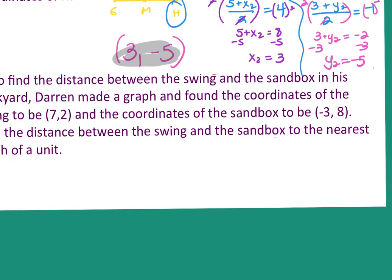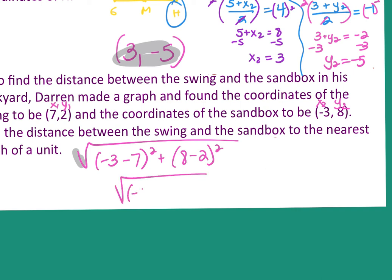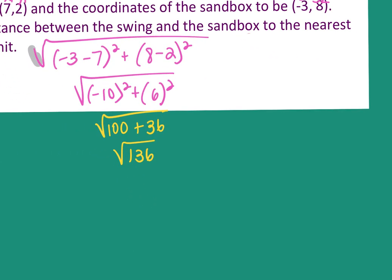So I get the square root of, this could be my x1, y1, this could be my x2, y2, or you could reverse it because it doesn't matter. Negative 3 minus 7 squared plus 8 minus 2 squared. What's negative 3 minus 7? Negative 10. 8 minus 2? 6. And then I get the square root of negative 10 squared, 100, plus 6 squared, 36. Square root of 136. Not a perfect square, but we're going to break it down into its factors to see if it can get simplified. So I know it's even, which means 2 goes into it. It'd be 68 times. Then 2, 34. Then 2, 17. 17 is prime, so I hit the dead end.